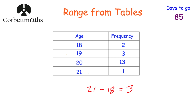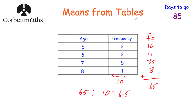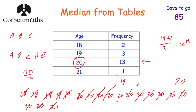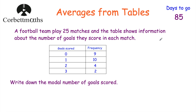So to summarise: to find the mode from a frequency table, look for the highest frequency. To find the mean, multiply each value by its frequency, add them all up for the grand total, then divide by the total frequency. To find the median, either write a list for small values or use the formula (n + 1) ÷ 2 to find the position. For the range, subtract the smallest value from the highest value.